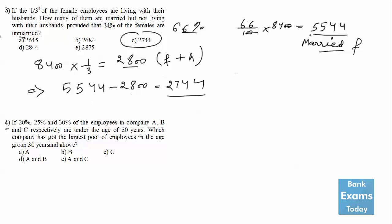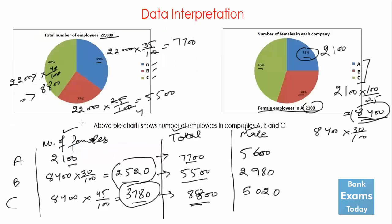Question 4: if 20%, 25%, and 30% of employees in companies A, B, and C respectively are under the age of 30 years, which company has the largest pool of employees aged 30 and above? So the remaining percentages above 30 are: company A = 80%, company B = 75%, company C = 70%. Total employees in A, B, C are 7700, 5500, and 8800 respectively.